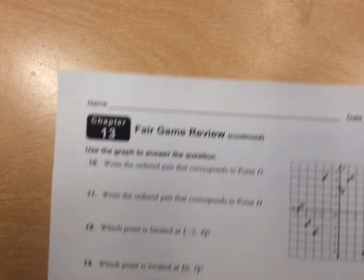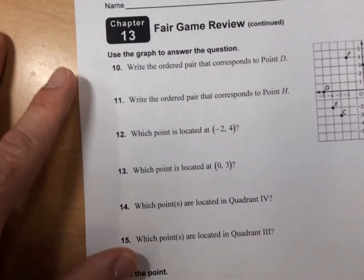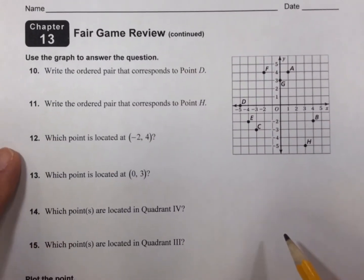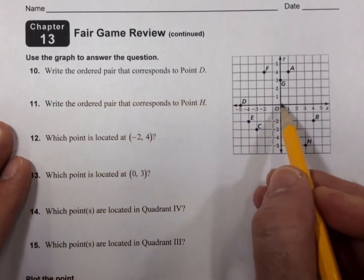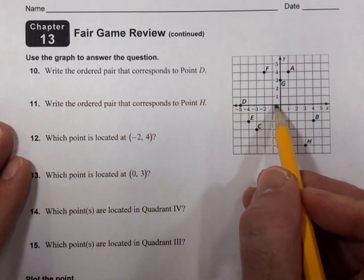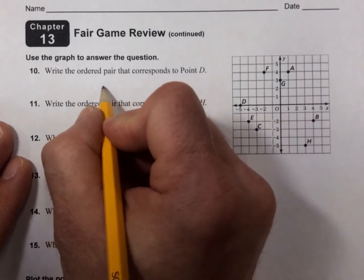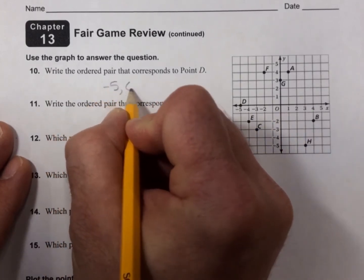On the other side, write the ordered pair that corresponds to point D. Well, point D is right here, right on the x-axis. So it's (-5, 0). -5, 0.